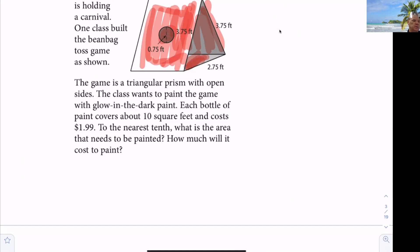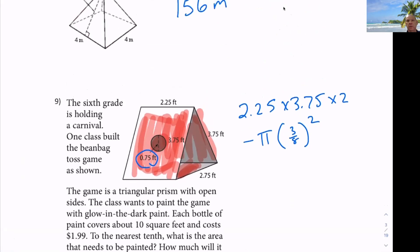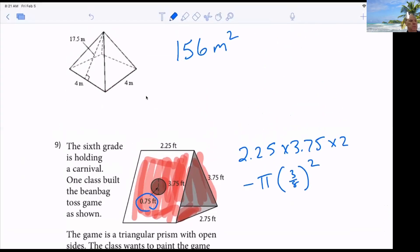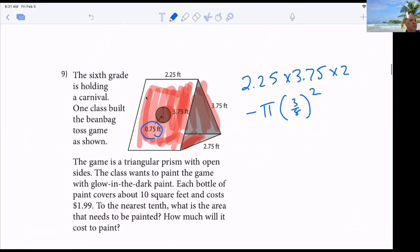And then there's one hole, correct? I think that's what it's saying, right? So if it were me, I would have done 2.25 times 3.75 times 2 minus pi times half of 0.75 is 3 eighths squared. Does that make sense? Oh, sorry. I don't know why it's here. My screen has been messing up here.